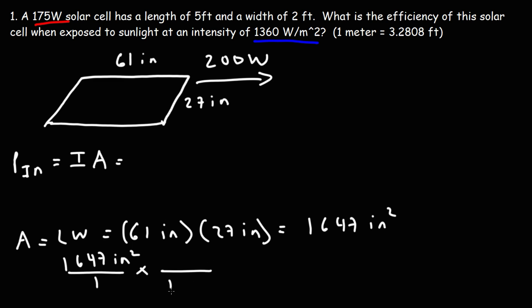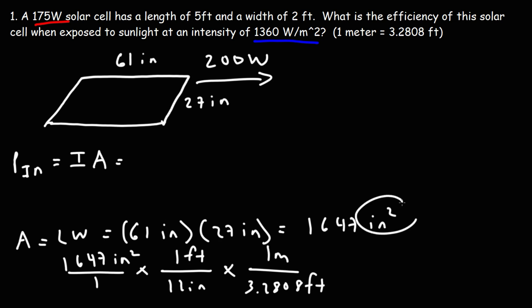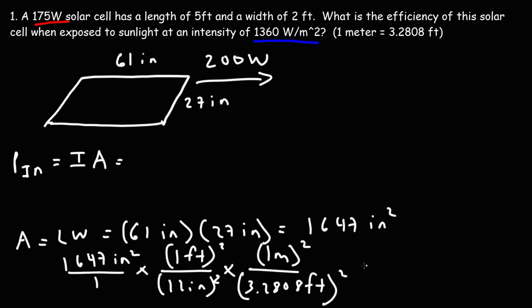First we convert to square feet — there are 12 inches in a foot — and then to square meters, using 3.2808 feet per meter. Because we're dealing with inches squared, we need to square everything. So it's 1647 divided by 12 squared (which is 144), giving 11.4375 square feet, then divided by 3.2808 squared. This gives us an area of 1.0626 square meters.